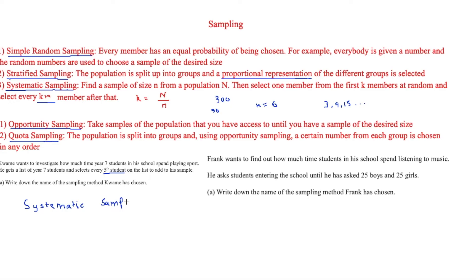The next question: Frank wants to find out how much time students spend listening to music. He asks students entering the school until he has asked 25 boys and 25 girls. This is quota sampling — not opportunity sampling — because the population has been split into groups (boys and girls) with a set number required from each group.